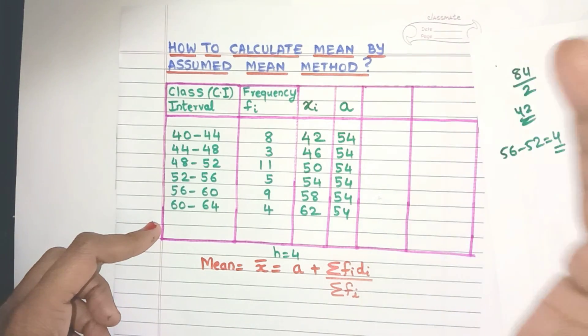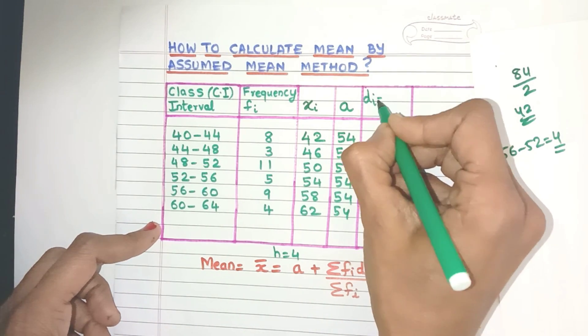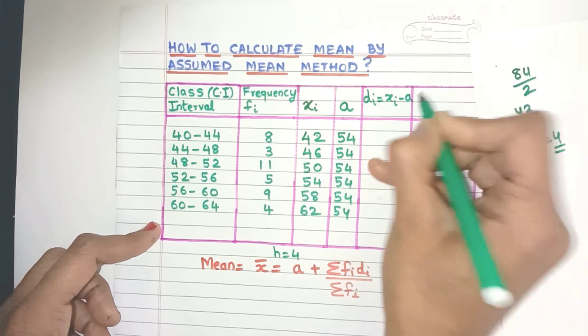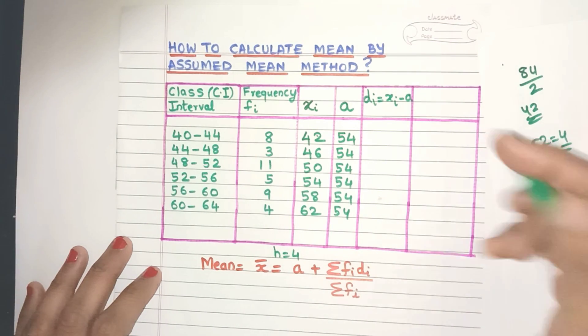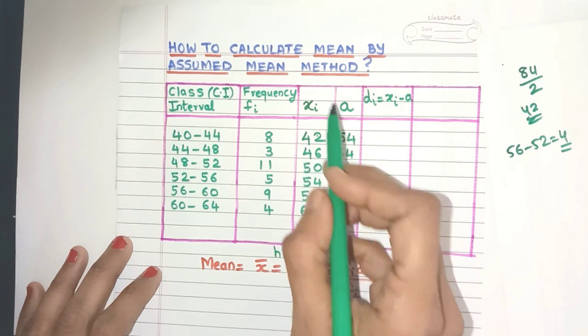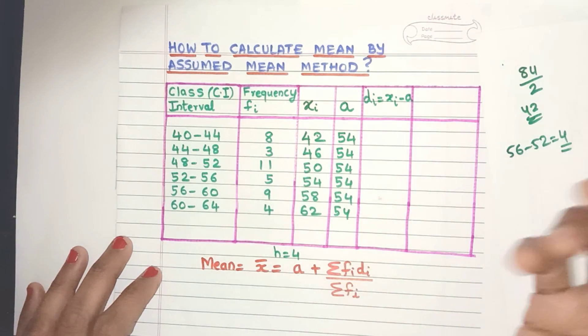So that brings the next column which is DI as xi minus A. So by looking at the formula, you will automatically know what is the next column to make. Now DI is nothing but the deviation. You are just going to subtract xi and A. So let's do that.